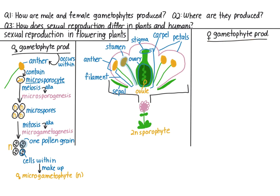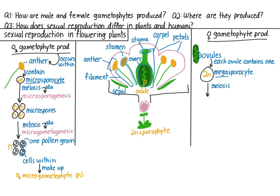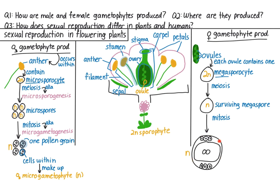Production of the female gametophyte occurs in the ovules. While each anther contains many microsporocytes, each ovule generally contains only one diploid megasporocyte — 'mega' means large. The megasporocyte undergoes meiosis, producing four haploid spores, three of which die off, leaving only one surviving haploid megaspore. The megaspore then divides a few times by mitosis, forming a group of cells. These cells make up the female gametophyte. One of them is the egg.